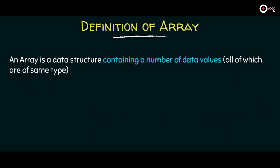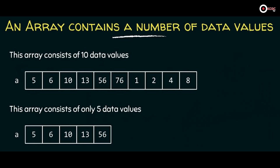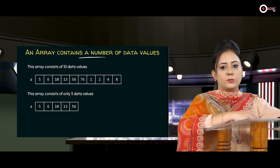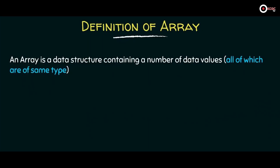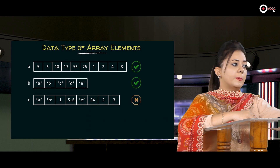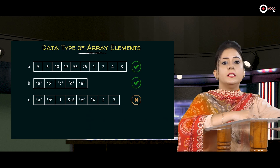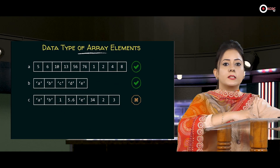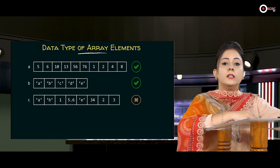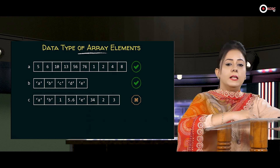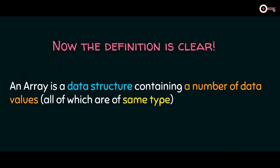Second part: containing a number of data values. In the first example I've taken 10 data values, and in the second example 5 data values — arrays store multiple data items. Third part: all of which are of the same type. In array A, all elements are integer type; in array B, all elements are character type. But in array C, I've mixed integer, floating point, and character types — and it is not possible to have different types of elements in an array. So array A and B are correct, but array C is incorrect.